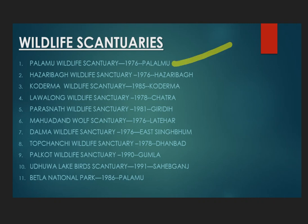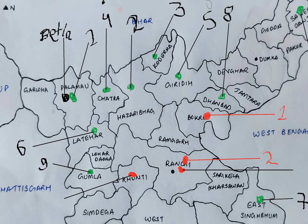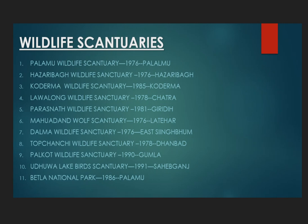The first is Palamu Wildlife Sanctuary, established in 1976 in Palamu district, with an area of 794.38 square kilometers. Key animals found here include elephant and sambhar.